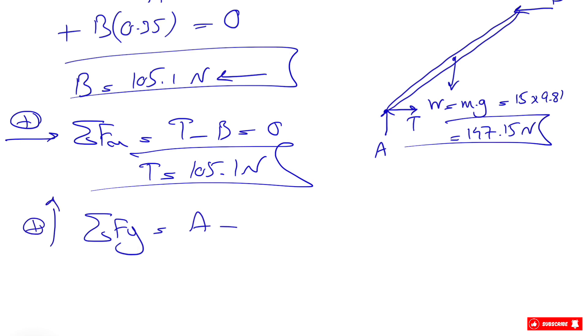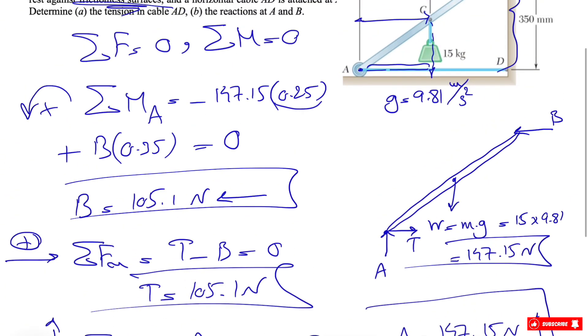And last one is our Fy equation. This will be our positive sign. What we have is A minus the weight equals zero. That shows the normal force A is what we found for the weight, which is 147.15 Newtons. The direction again was correct since we didn't get any negative number.